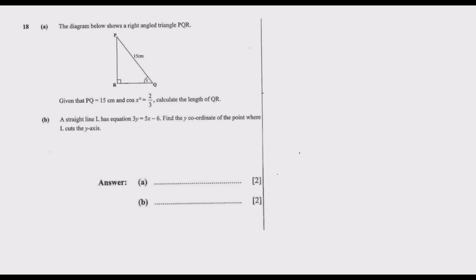Given that PQ is equal to 15 centimeters and cosine x equals 2 over 3, calculate the length of QR. The fact that this triangle has a right angle means we can use SOHCAHTOA. From what we've been given, we've been given cosine x. Cosine is given by adjacent over hypotenuse.